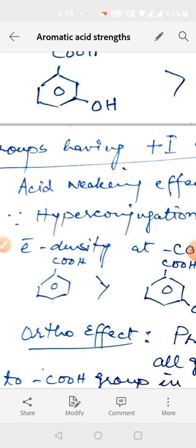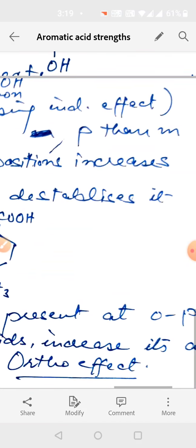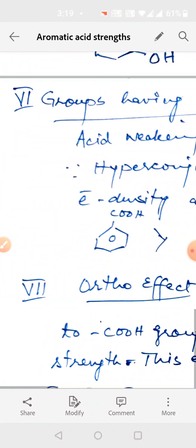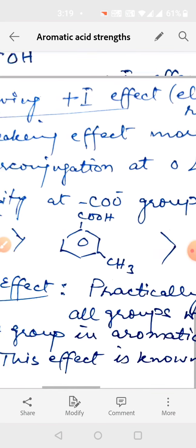But there is also an effect of hyperconjugation at ortho and para positions, which increases electron density. So compared to benzoic acid, the most stable is the meta one.